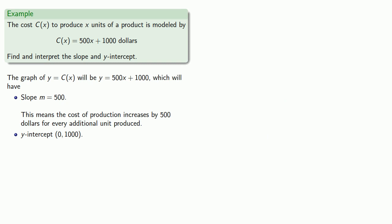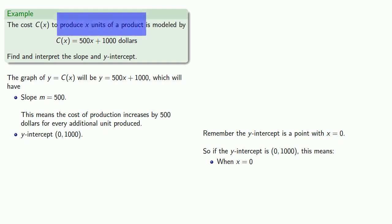What about our y-intercept? Remember, the y-intercept is a point with x equal to 0. So if the y-intercept is (0, 1000), this means that when x is equal to 0, well, x is the number of units produced. So when x equals 0 items are produced, our y-value is 1000.